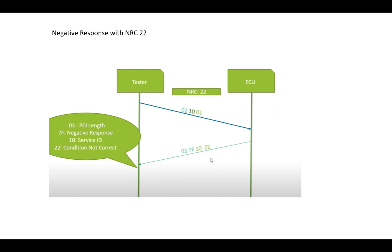For NRC 0x22 (conditions not correct): say the request is 0x02, 0x10, 0x01, but the ECU's operating or internal conditions are not met — for example, the server is in a critical mode, a previous request is still in progress, or the requested criteria are not met. In such cases you get NRC 0x22, and the response is 0x03, 0x7F, 0x10, 0x22.